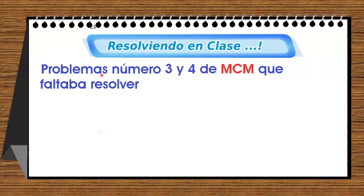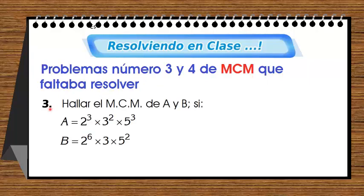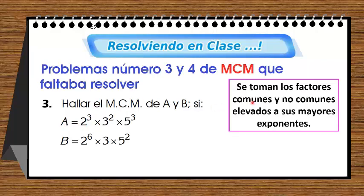Resolviendo en clase, problemas 3 y 4 de mínimo común múltiplo. Hallar el mínimo común múltiplo de A y B si A = 2³ × 3² × 5³ y B = 2⁶ × 3 × 5². Esto es la forma canónica de cada número. Se toman los factores comunes y no comunes elevados a su mayor exponente.